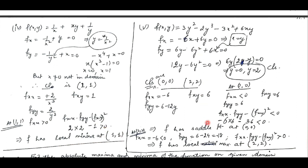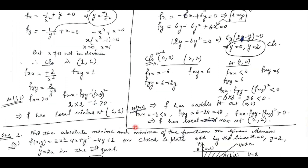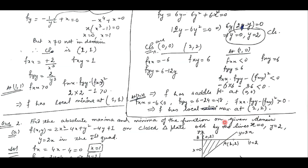Similarly, we can do question number 5. Again we find out the partial derivatives, put them to 0, and get the critical points. At those critical points we check the conditions. The function has a saddle point at (0, 0) and local maxima at (2, 2).